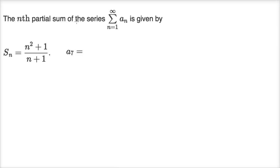We're told that the nth partial sum of the series from n equals one to infinity of a sub n is given by, and so the sum of the first n terms is n squared plus one over n plus one, and they want us to figure out what is the actual seventh term. Pause this video and see if you can figure it out on your own before we work through it together.